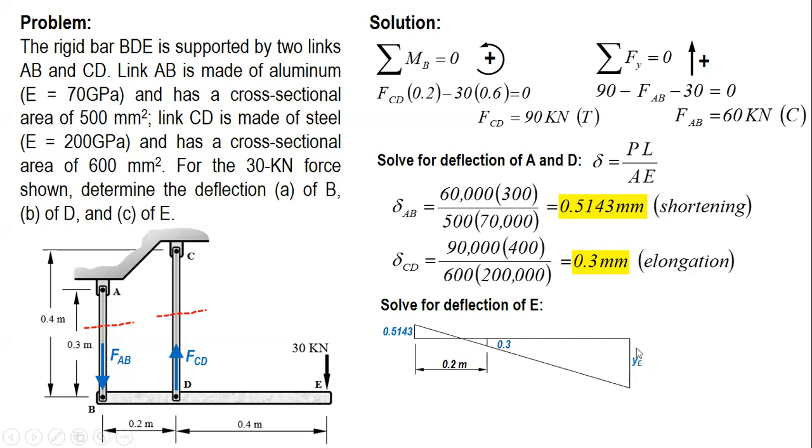How do we get or how do we solve Y sub E? By ratio and proportion. But first, we determine this distance for similar triangles. Vertical is to horizontal. We denote this distance as X.